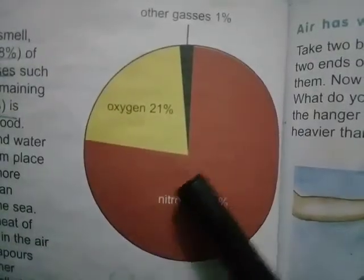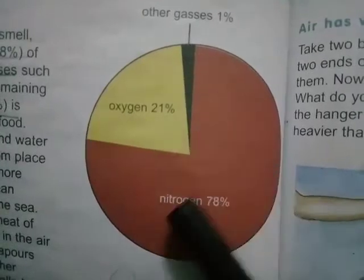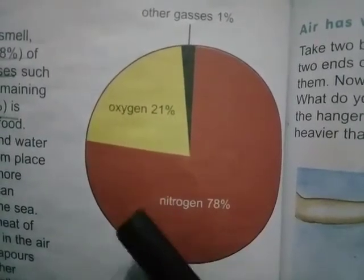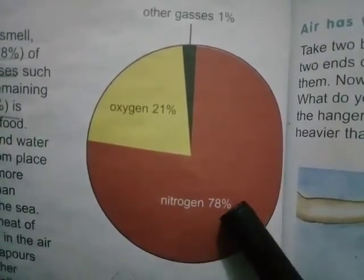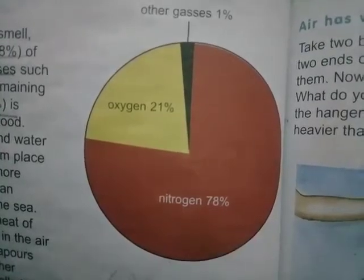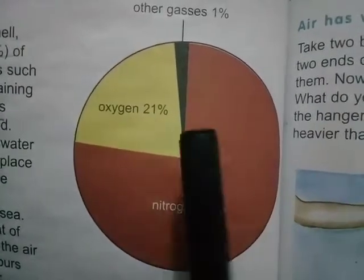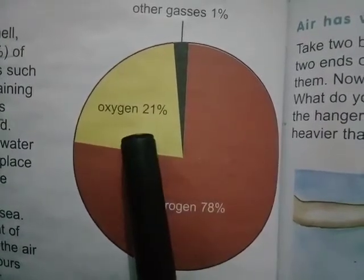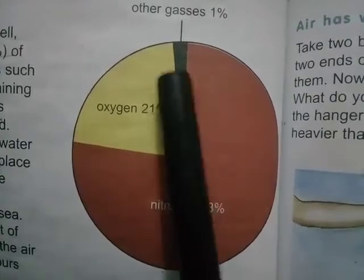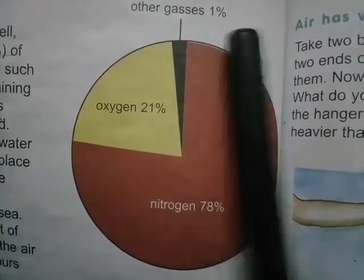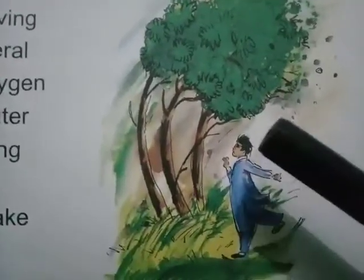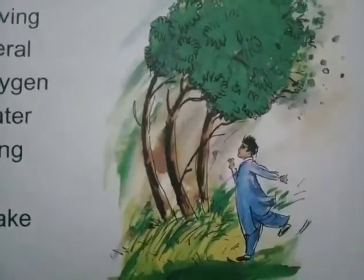Air is made up of several gases. The main gases are nitrogen — 78% nitrogen, oxygen is present at 21%, and 1% other gases. Air also contains water vapors.